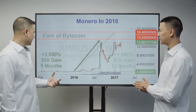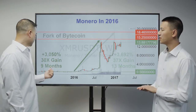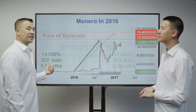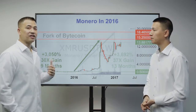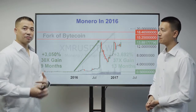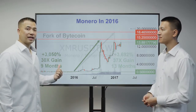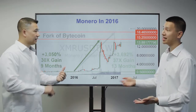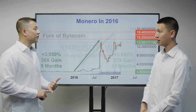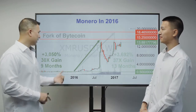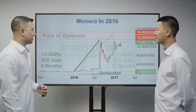Let's talk about Monero. In 2016, it had over 3,000% gains in the first nine months — that's 30 times your money. That is definitely life-changing: if you put in a thousand dollars, it turns into $30,000 in nine months. Ten thousand dollars becomes $300,000 — enough for a down payment on a house, to pay for college, or pay for a wedding.